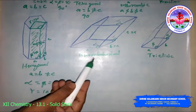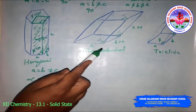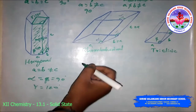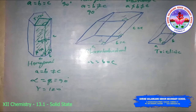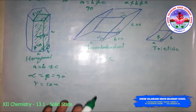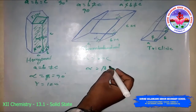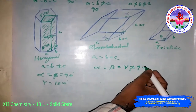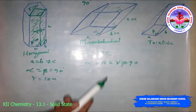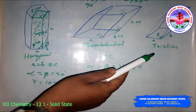The rhombohedral or trigonal crystal system has only one possible variation: primitive. All edge lengths are equal: A = B = C. However, alpha = beta = gamma, but none of the angles equal 90°.